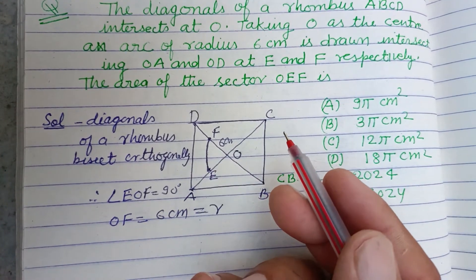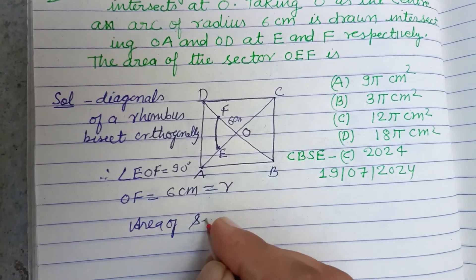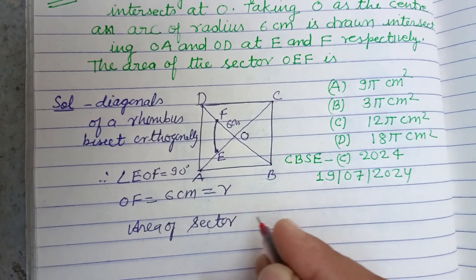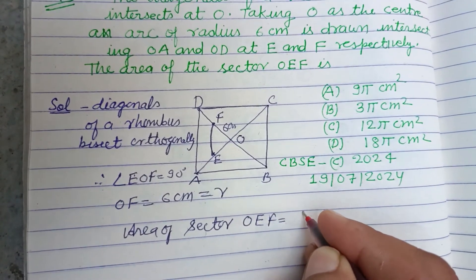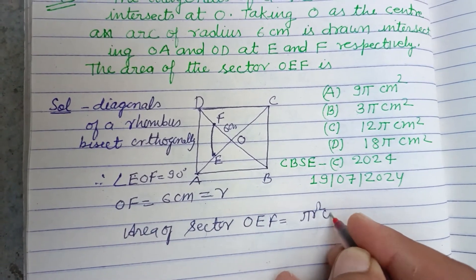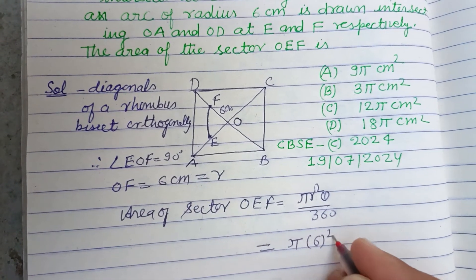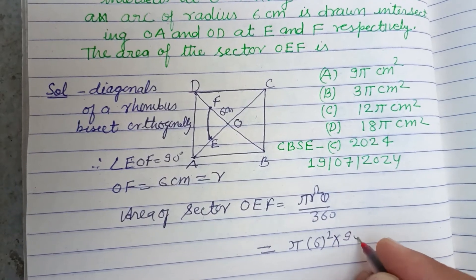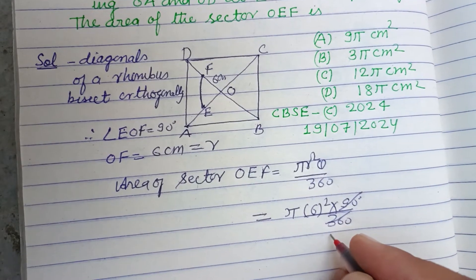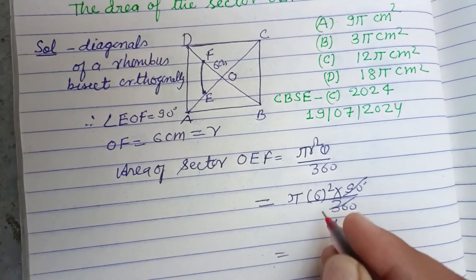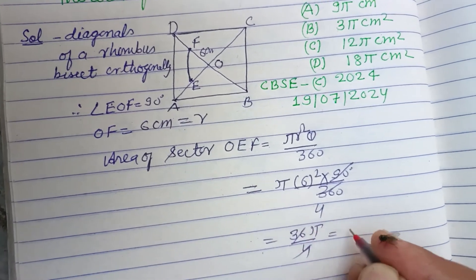The area of the sector OEF: area of sector OEF equals πr²θ/360. π, r is 6, theta is 90 upon 360. So this is 6×6=36, π over 4... 9π centimeter square is the area of the sector.